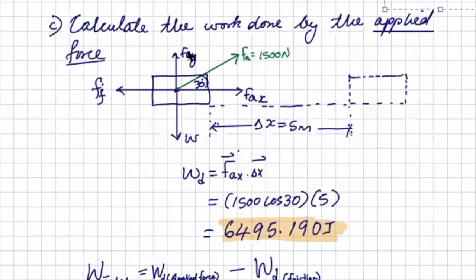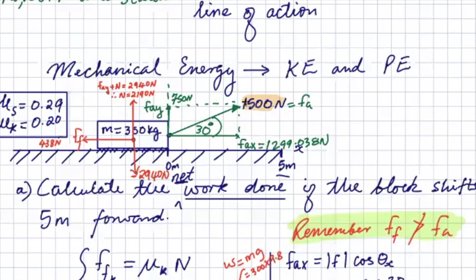You can calculate the work done by each of the forces. So you can also calculate the work that is done by the applied force. Remember the applied force is this force over here, the 1,500 newtons, but we know not all of it will be doing work in the horizontal axis. Only the fax will do work.